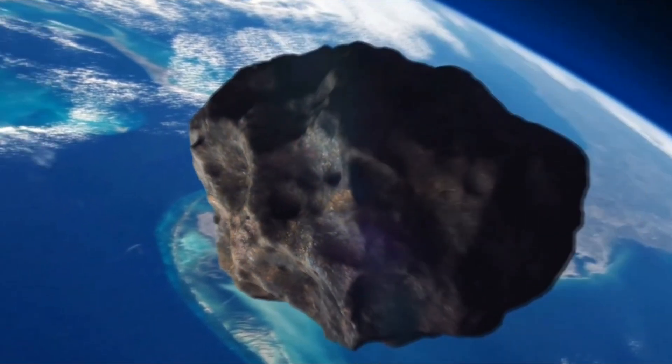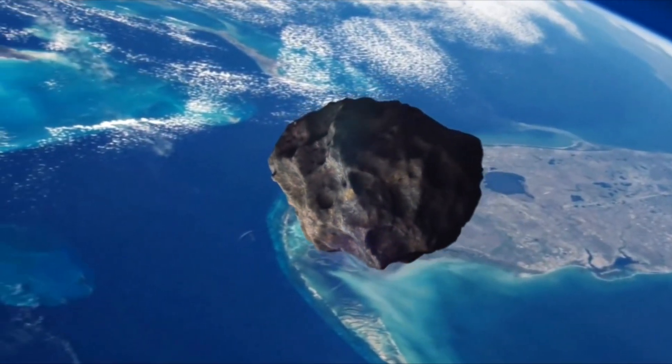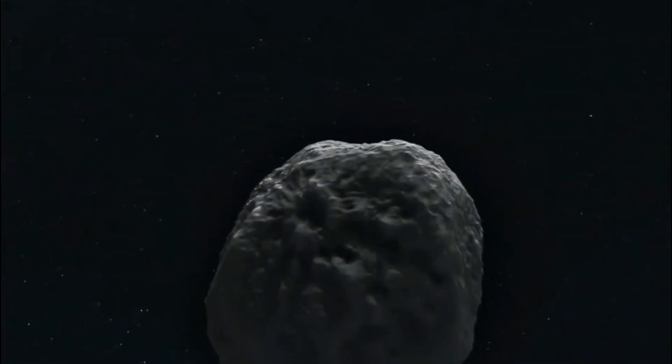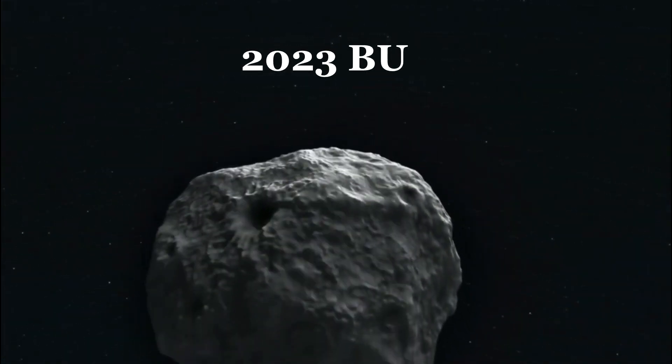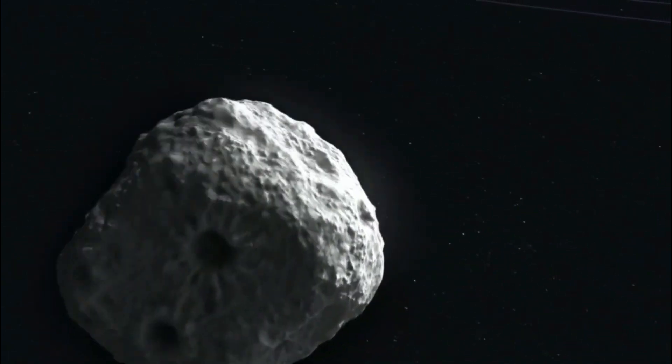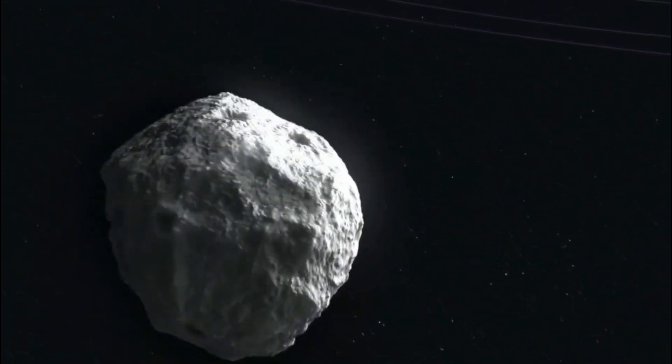An asteroid the size of a box truck made one of the closest passes of planet Earth ever recorded. The small near-Earth asteroid, called 2023BU, zipped over the southern tip of South America at 7:27 p.m. Eastern time, Thursday, March 9th.